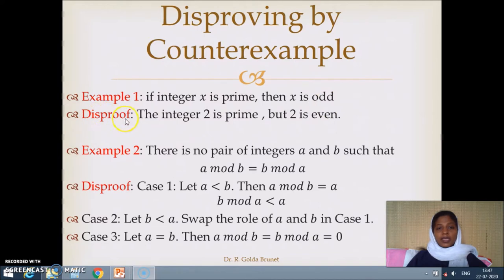Then we are coming up with an example which is integer 2, and integer 2 is prime. 2 is an integer as well as prime, but it is not odd. It is an even number.